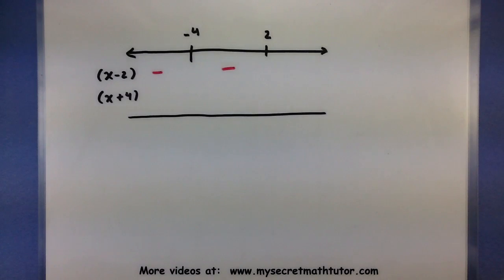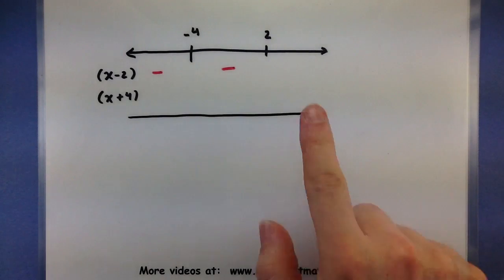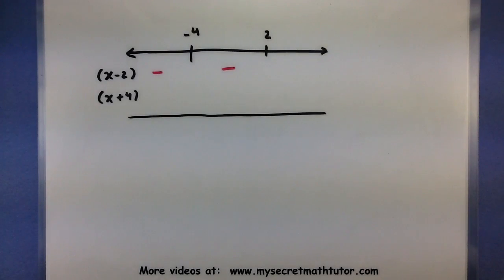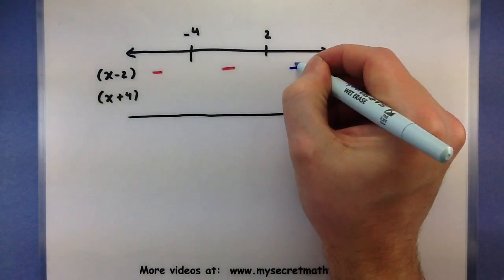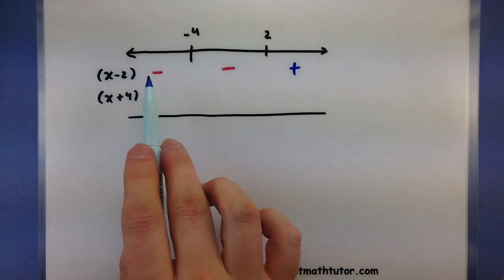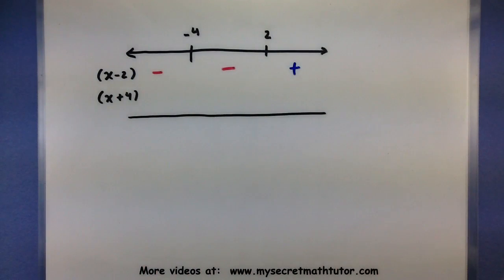So again, let's pick a number. Let's choose 4. I'm going to grab 4, plug it in. 4 minus 2 is 2, and that is positive. So this little factor right here looks like it's negative, negative, and then positive on those intervals.